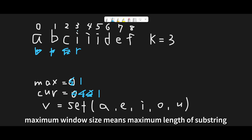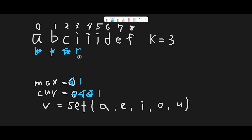Now we are at index 3, so the max window runs from index 1 to 3. Index 0 is already out of bounds, so we have to subtract minus one from current_vowels because it is out of bounds. That is the second condition: we check the left side of the window and decide whether to subtract one from current_vowels depending on whether that character is a vowel or not. We compare current_vowels 1 and max_vowels 1, so we don't update.